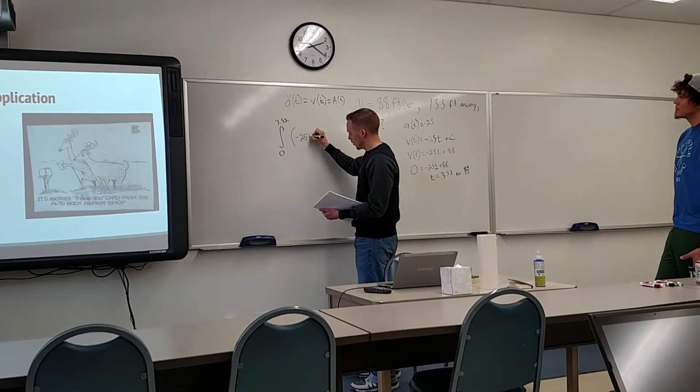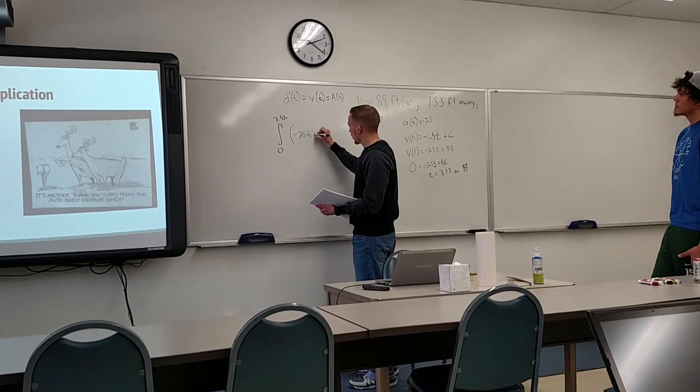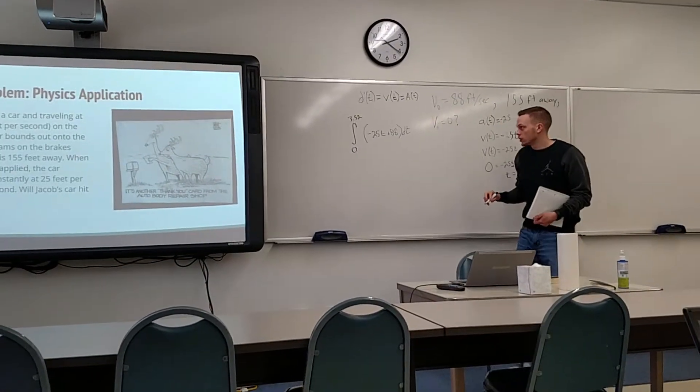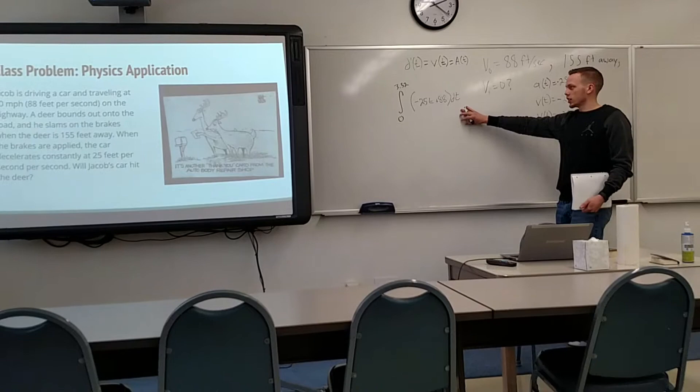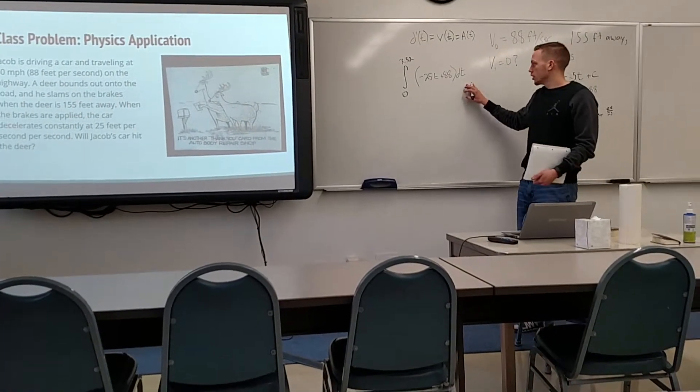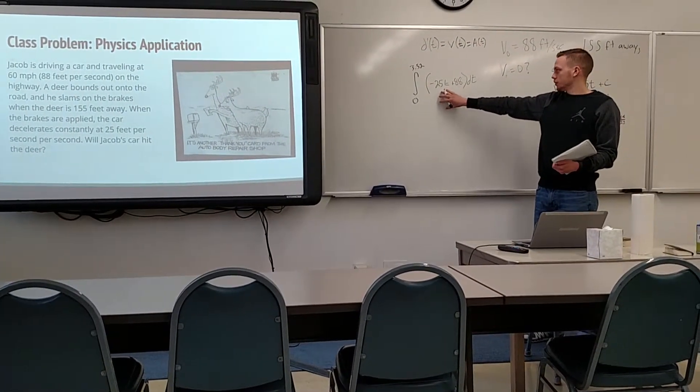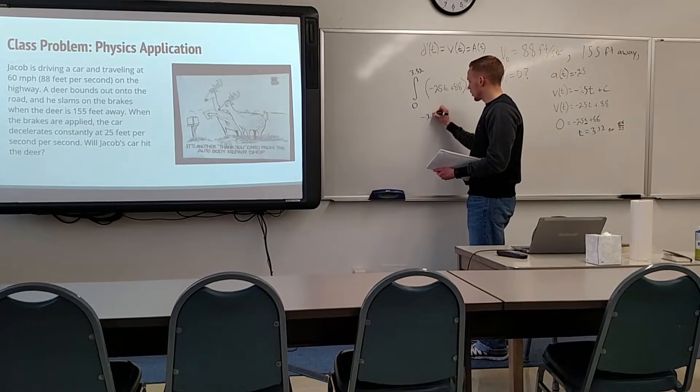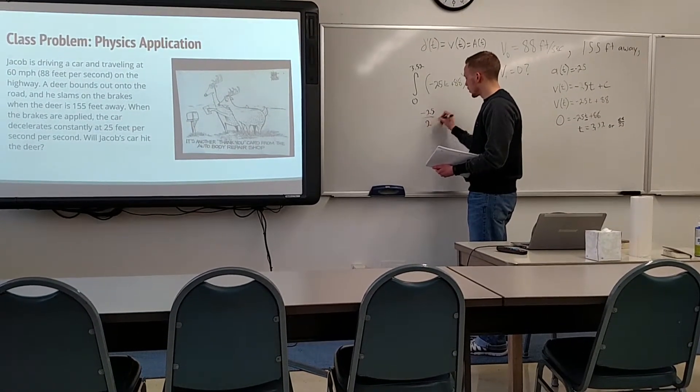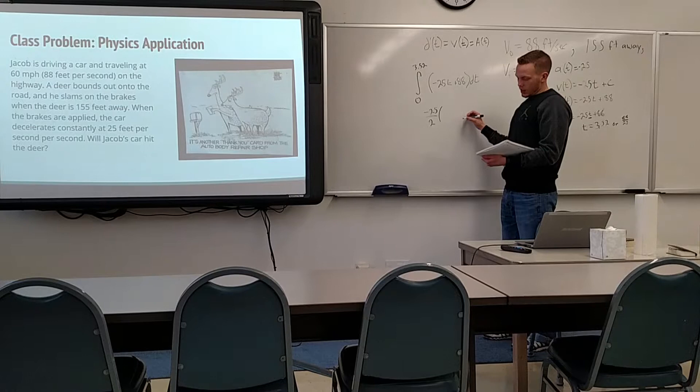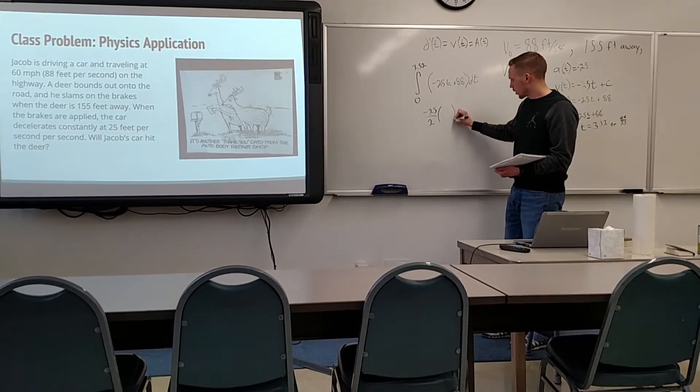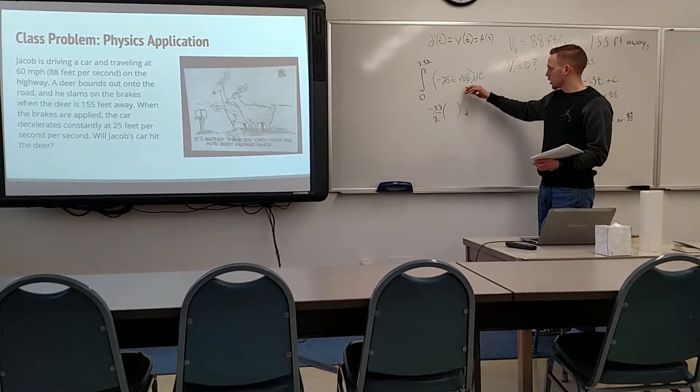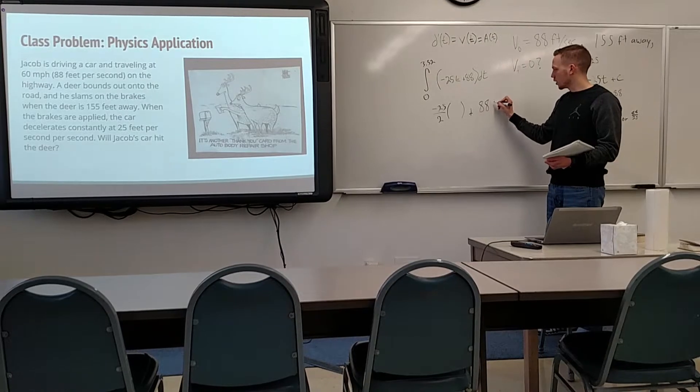So we have negative 25t plus 88 dt. The way you solve an integral like this is first you integrate this function here. When we integrate that function, we're going to get negative 25 over 2, and it'll be t here, but I'll leave that blank for now. Plus then 88t, but again I'll leave that blank for now.